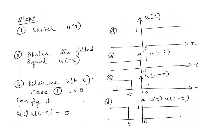To get u(t − τ), we consider two cases: t < 0 and t ≥ 0. For case 1, t is less than 0. We will assume t is some value which is less than 0 and sketch u(t − τ) by shifting the folded signal u(−τ) accordingly.